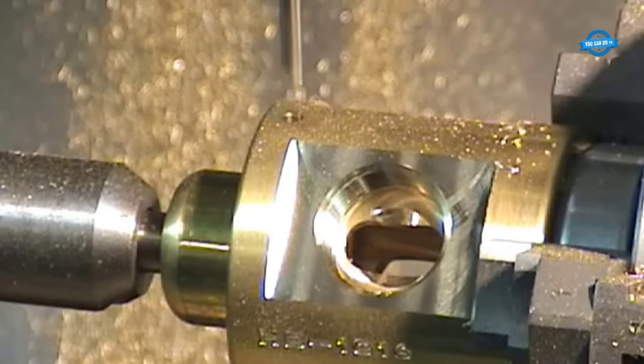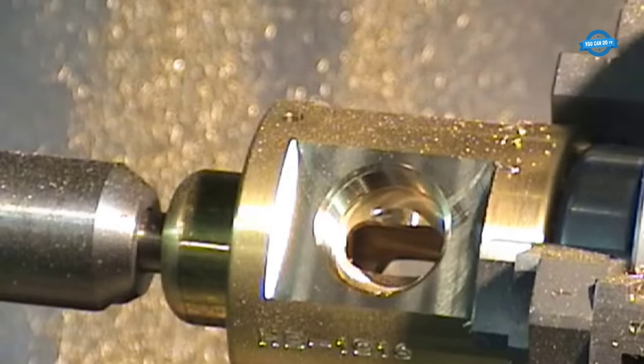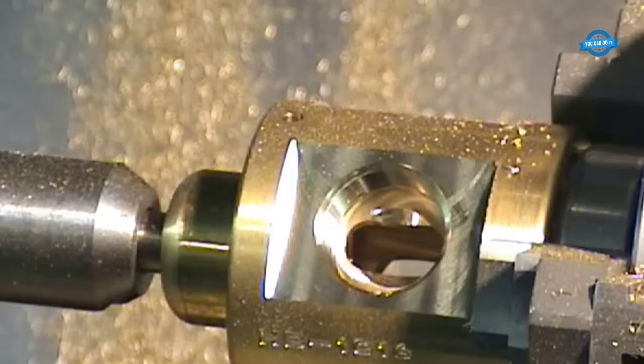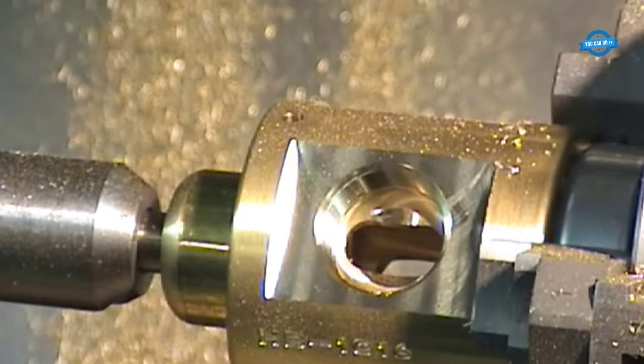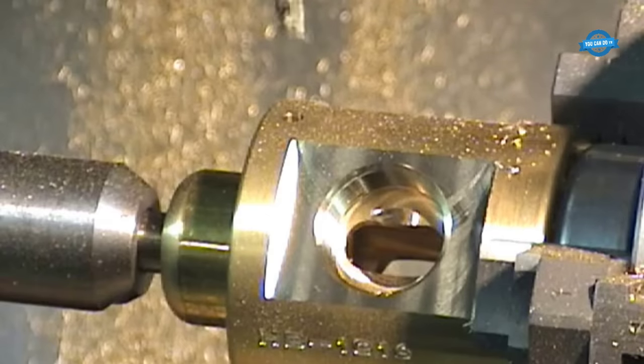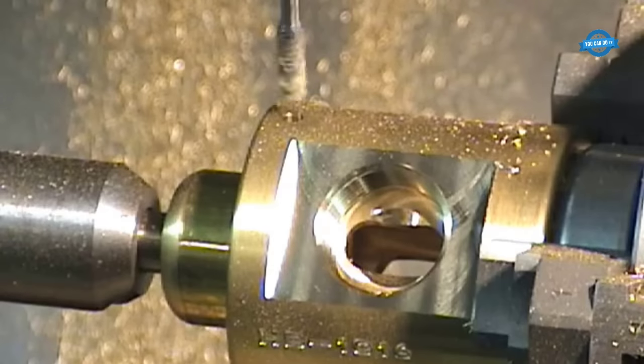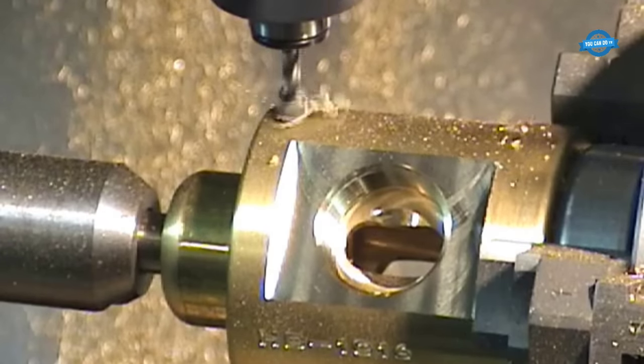After the machining process is complete, a final inspection is performed to verify the accuracy of the machined part. Precision measuring instruments, such as calipers or CMMs (coordinate measuring machines), are used to ensure the dimensional accuracy and tolerances meet the required specifications.